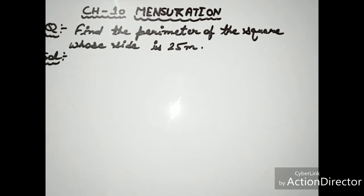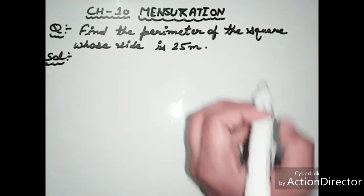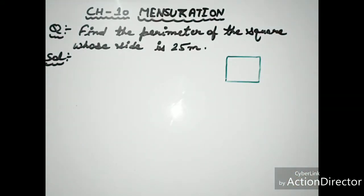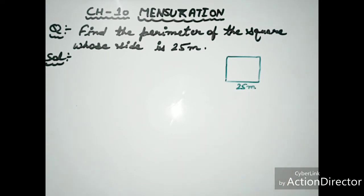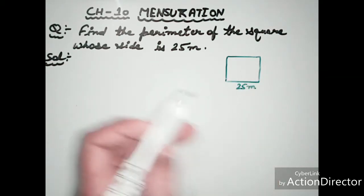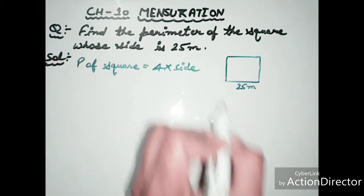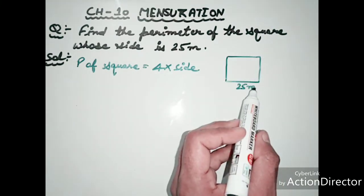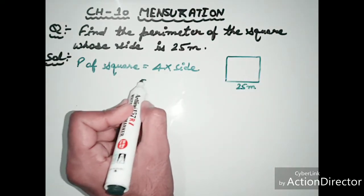The next example: Find the perimeter of a square whose side is 25 meters. Here we draw a square where the length of one side is 25 meters. The perimeter of a square equals 4 into side, because a square has 4 sides and all sides are equal, each having length 25 meters.